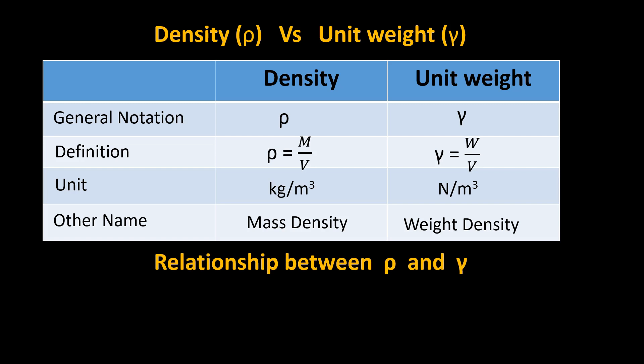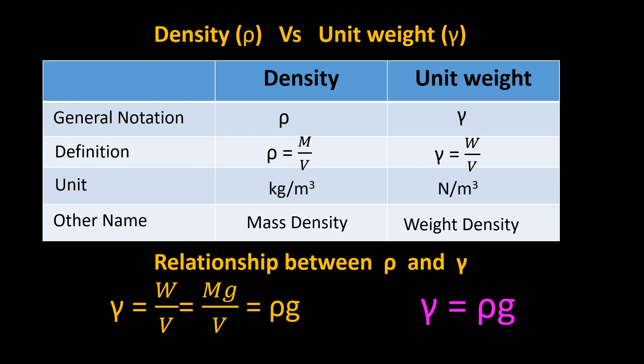Relationship between rho and gamma: gamma equals W over V, i.e., weight over volume. Since W equals mg, this becomes mg over V. And since m over V equals rho, we get gamma equals rho times g. That is, unit weight equals density times gravitational acceleration.